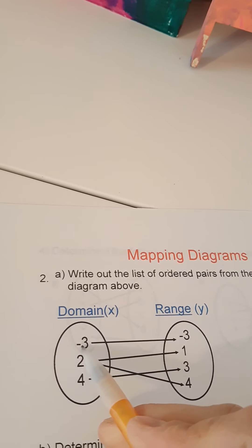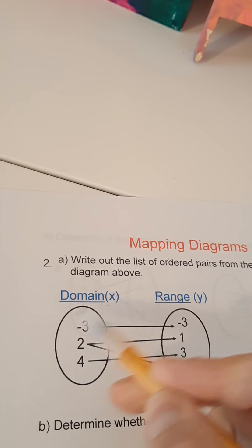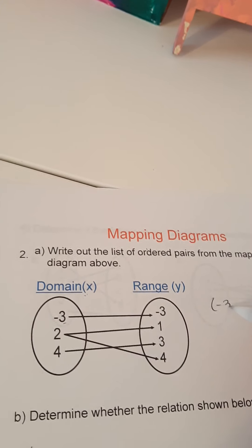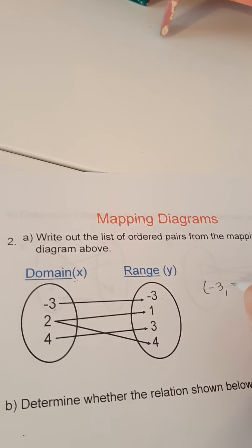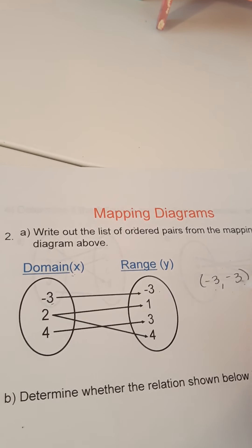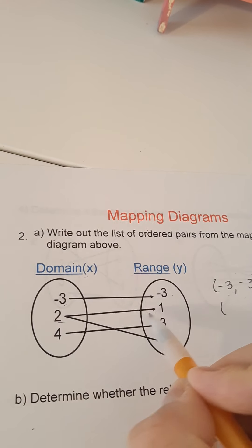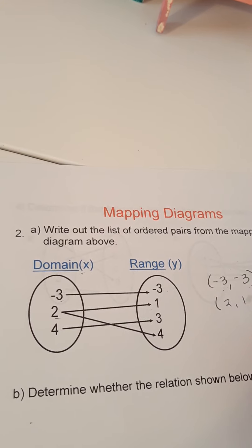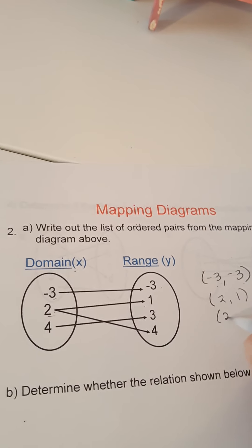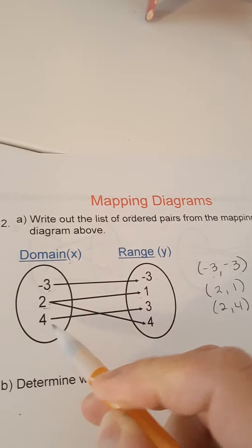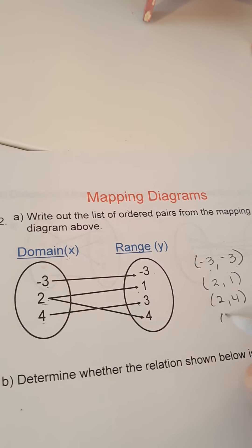So the x value, which is always on the left, the left bubble is always x, has an arrow that goes to negative 3. So negative 3, negative 3. The 2 has an arrow that goes to the 1, but it also has an arrow that goes to the 4. And finally, the 4 has an arrow that goes to the 3.